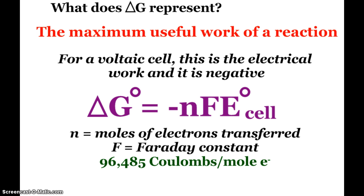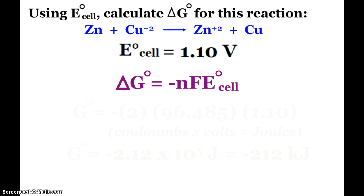This constant is given to you in your AP test packet as well. What you can do here now is using the cell potential, we can calculate delta G.